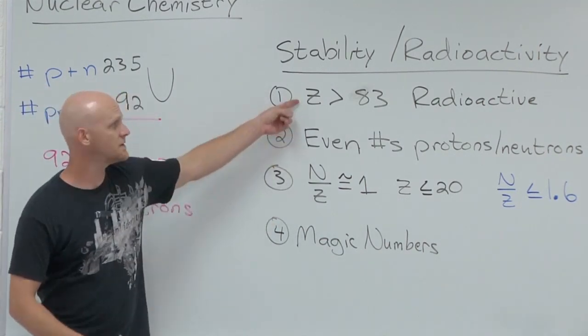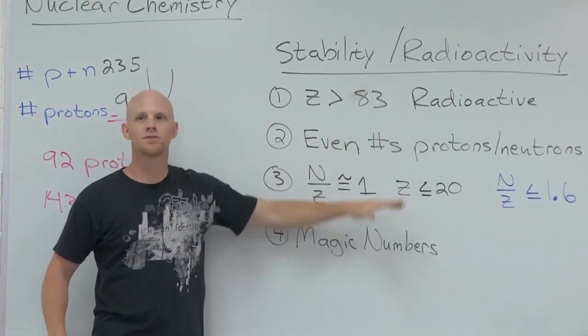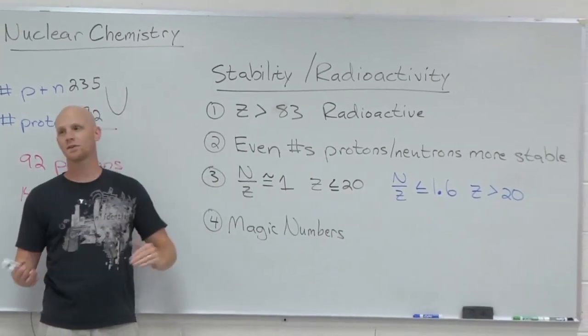So again, the first rule allows you to identify something right off the bat as radioactive. The last three rules allow you to look at things and see if they're going to more likely to be stable or more likely to be radioactive.